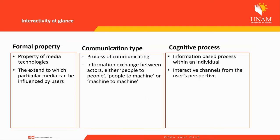There are three categories of interactivity. The first one is the formal property — the property of media. As you may be able to relate, when we look at the characteristics of digital media, we spoke about different characteristics, and one of them is interactivity. But these properties are not always applicable to all media, even though they are particularly applicable to digital media.